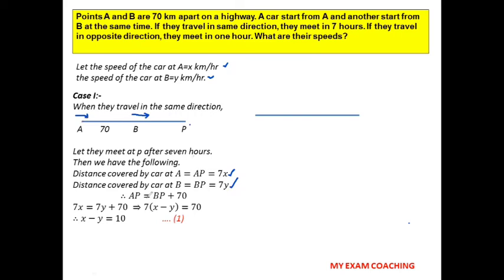Rearranging 7x = 70 + 7y: we get 7(x − y) = 70, so x − y = 10. This is equation 1.